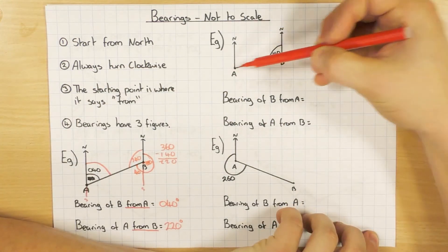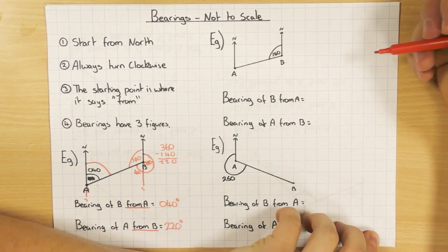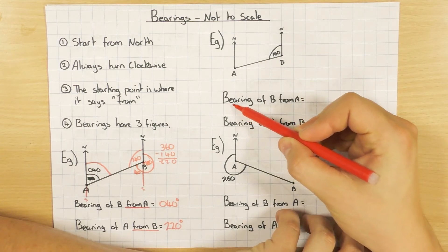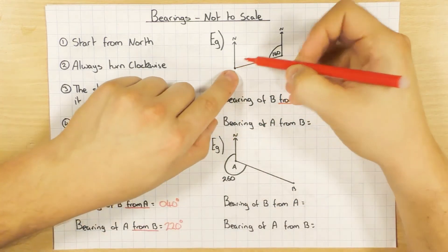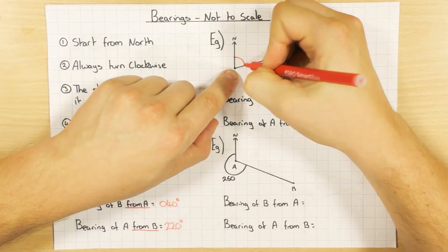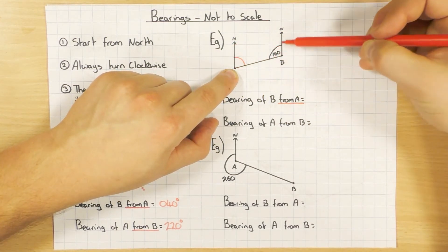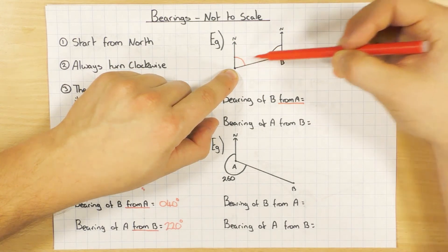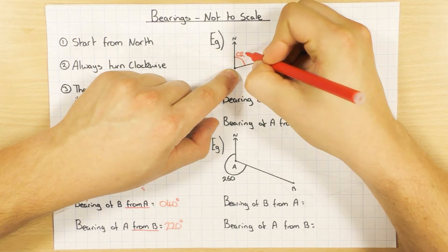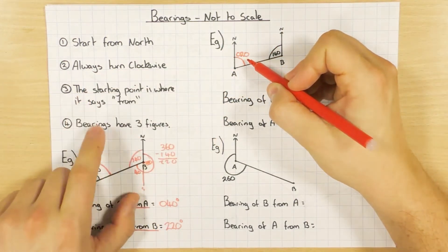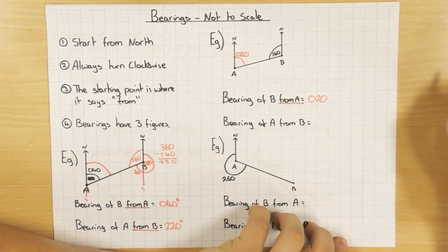Next example: same setup with point A and point B with north lines, but this time the given angle is 160 degrees. Bearing of B from A — I'm at A, north clockwise, so that's the bearing I'm after. Using the interior rule: 160 and the unknown angle add up to 180, so it must be 20 degrees, written as 020 because bearings always have three figures.